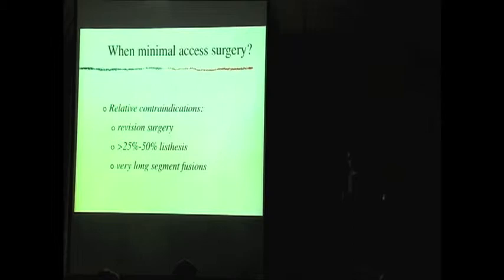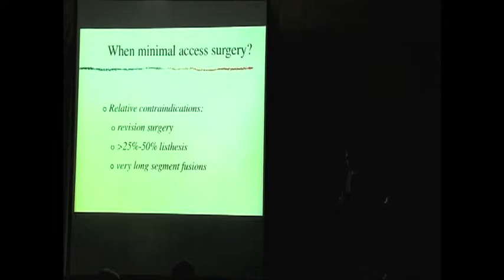Reasons not to do it: patients who have had surgery before is a relative contraindication — not absolute. A lot of scar tissue from multiple previous spinal surgeries can make trying minimal access difficult, because the scar tissue makes muscle and tissue planes very different from a first-time surgery. Patients with a large amount of spinal slippage where the spine doesn't line up correctly can be hard to correct, and very long-segment fusions for scoliosis correction can also be beyond what our technology currently allows.